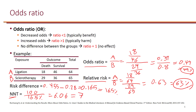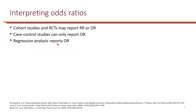Here are a few things to know about odds ratio. Cohort studies and randomized control trials can report either relative risk or odds ratio. However, case control studies can only report odds ratio — if you see a case control study reporting relative risk, the study has been conducted inappropriately. Additionally, regression analysis results will also report odds ratio.